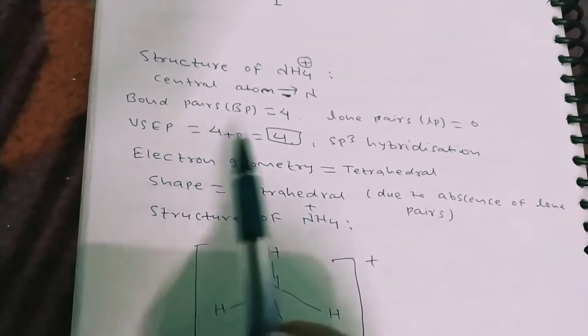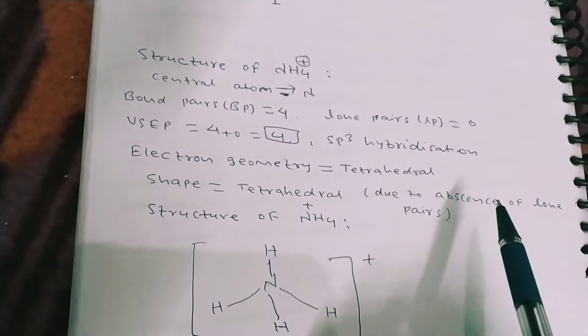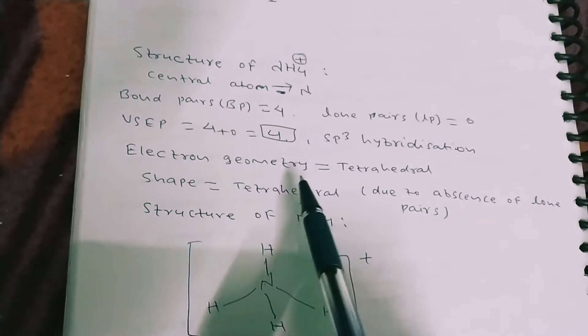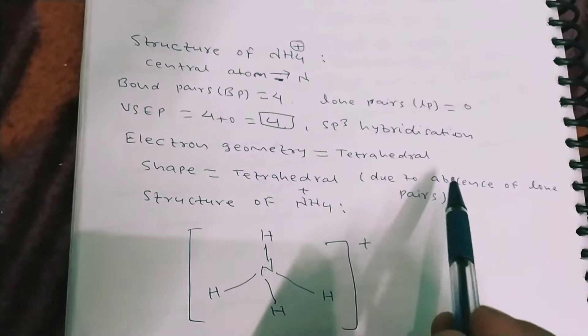If the total electron pairs is 4, then sp3; if 5, then sp3d; if 3, then sp2. Electron geometry will be tetrahedral...